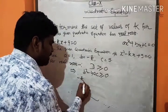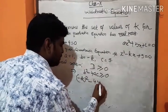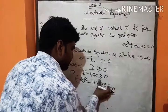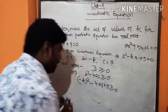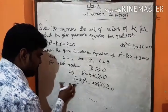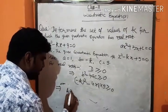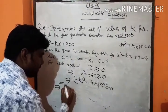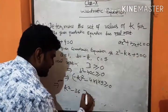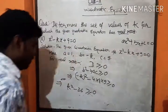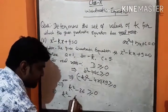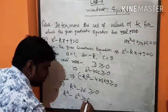Substituting the values: minus k whole square minus 4 into 1 into 9 greater than or equal to 0. Since minus k whole squared gives k squared, this implies k squared minus 4 into 1 into 9, which gives k squared minus 36, greater than or equal to 0.